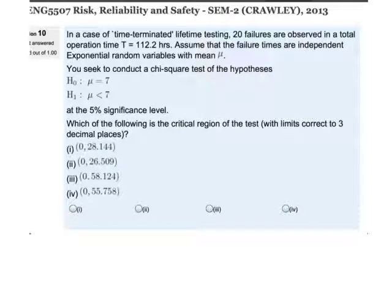So if it was a failure-terminated lifetime test, not the correct one in this case. And this is the correct one in our case, number 1, that it's 42 degrees of freedom.